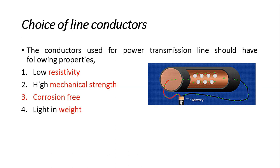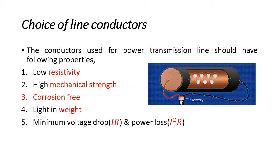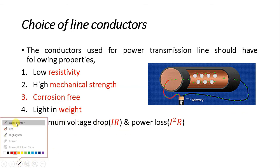The third property is that it should be corrosion free. The fourth is it should be light in weight — otherwise, if the conductor weight is more, we need heavier tower structures, which is not economical. The fifth criterion is minimum voltage drop and minimum power loss. Minimum voltage drop gives us high receiving-end voltage and improves voltage regulation, while minimum power loss improves transmission efficiency.